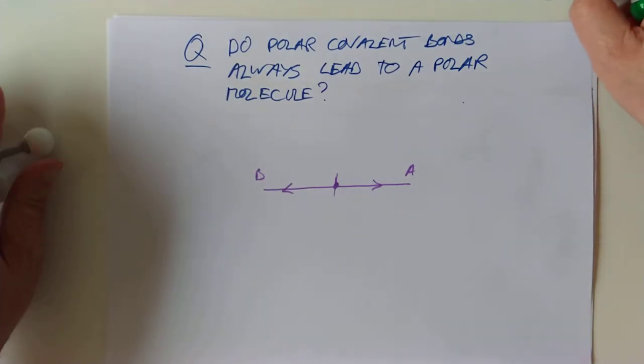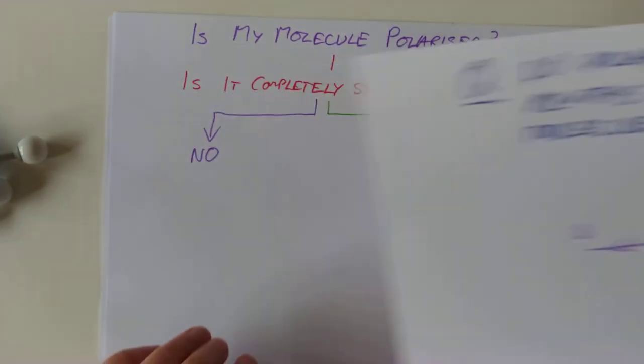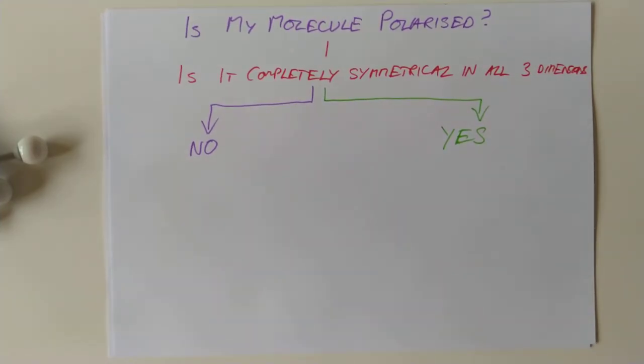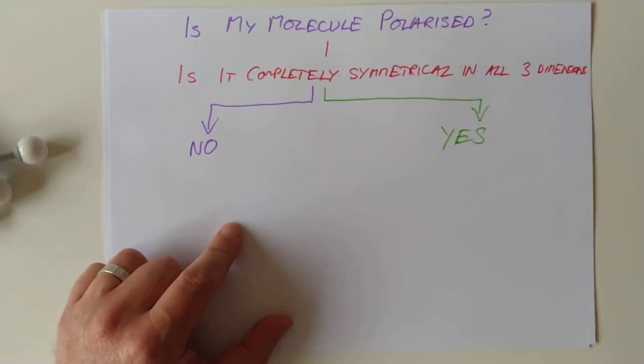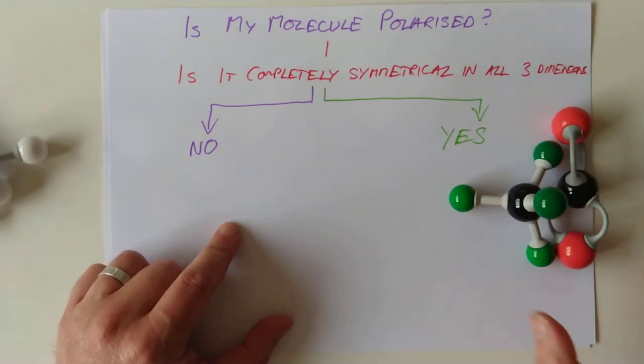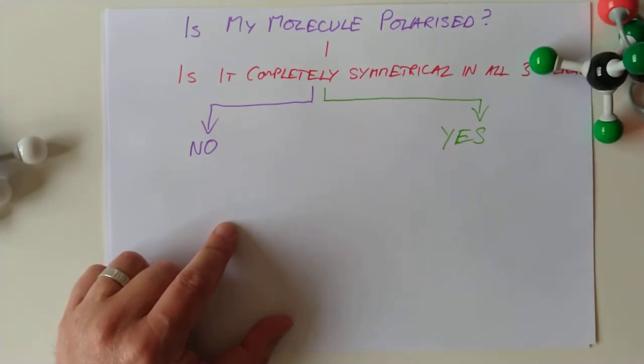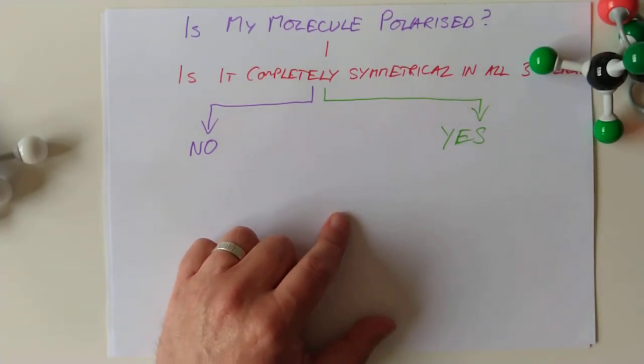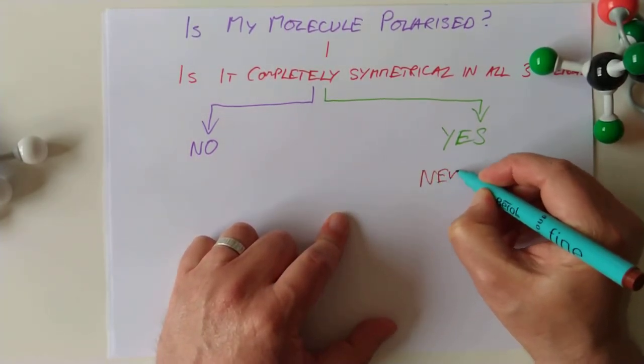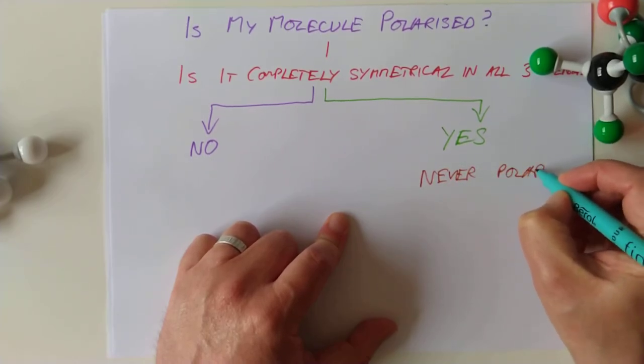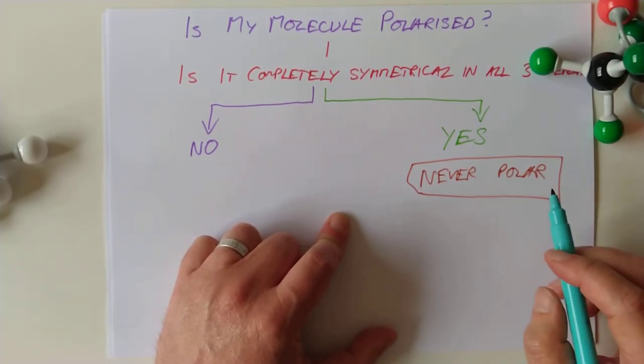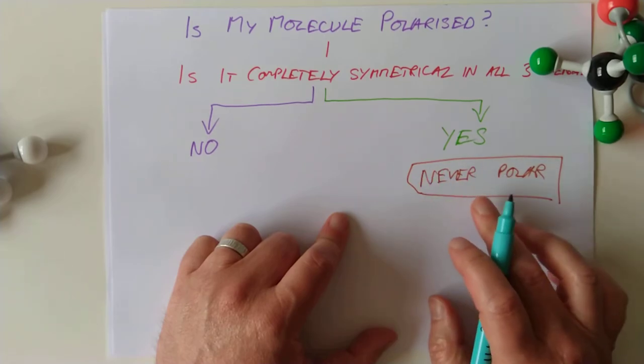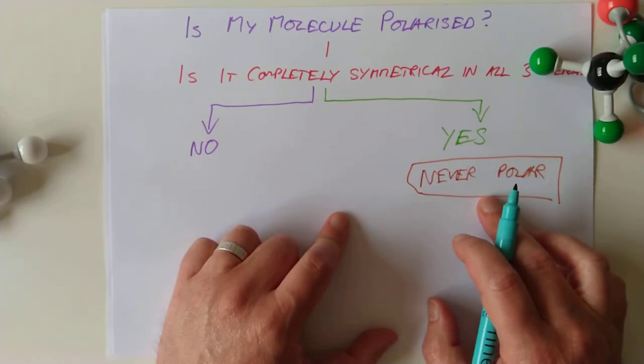And in fact I'm trying to condense this into a flowchart here. So is my molecule polar? That's the question of the day. Here's a phrase for a t-shirt. Is my molecule polarized? Ask yourself this question first. Is the molecule completely symmetrical in all three dimensions like these guys? If the answer to that question is yes, it is symmetrical, then nope, your molecule will never be polar. Who cares by the way whether the molecule is polar or not? In the next video we will have a look at some serious property differences in the real world caused by this lack of polarity.